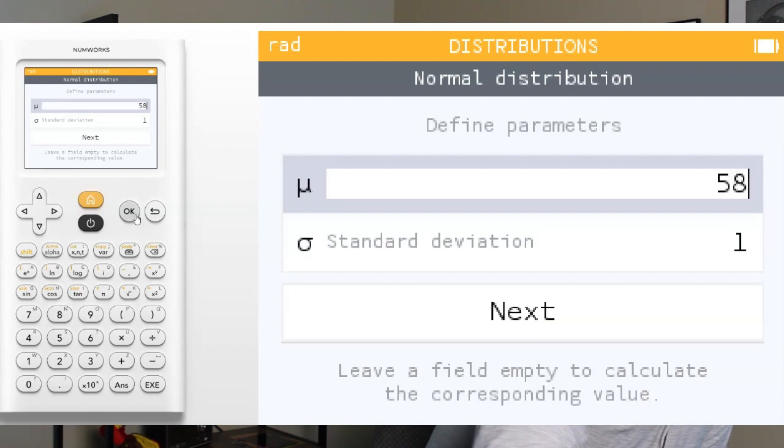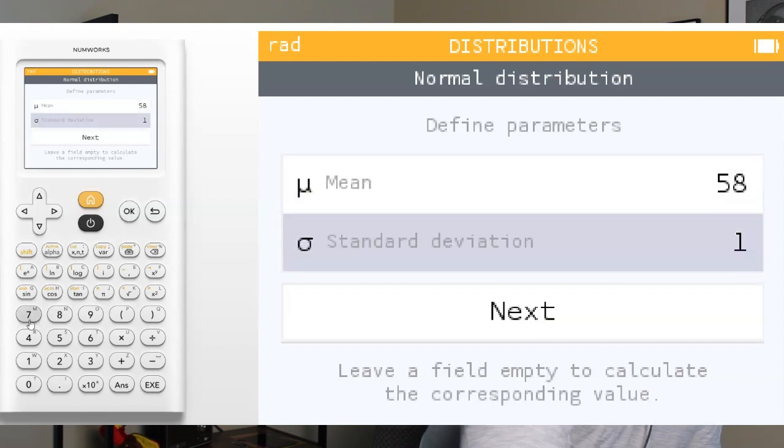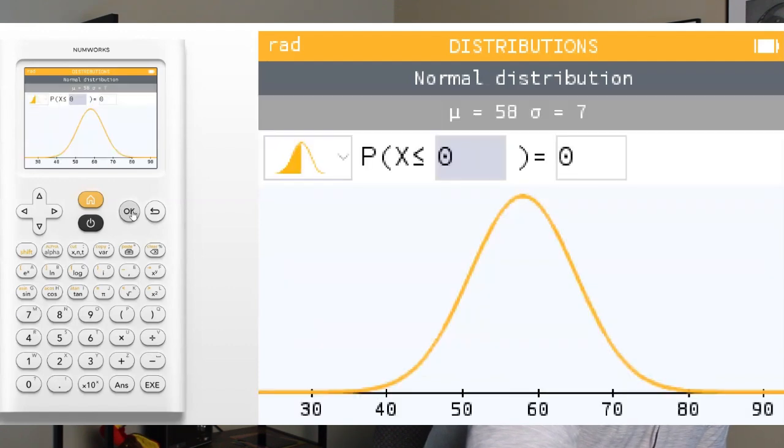So we're going to type in the mean of 58, hit OK, the standard deviation of 7, hit OK, and then we're going to go to Next, hit OK.